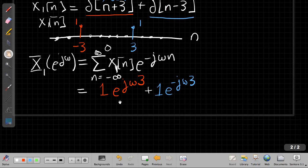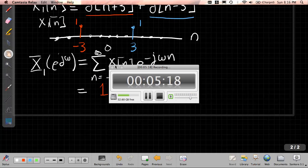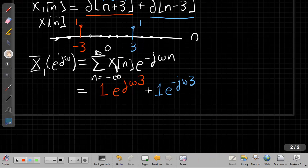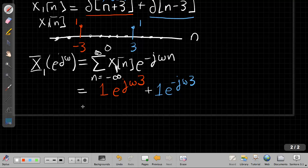And then I'll have another term from the blue pulse here—it will contribute a term that's 1 times e^(-j3ω), right? Because when n is plus 3, this term becomes 1 for the amplitude, and then the exponential is still there. And now we recognize this as our old form Euler's equation. If I just simplify it one step at a time, I'd say, well, this is e^(j3ω) + e^(-j3ω). So the Fourier transform for this is, well, this is 2 times cosine of 3ω.